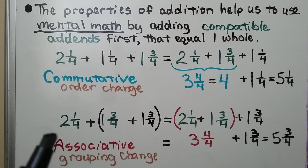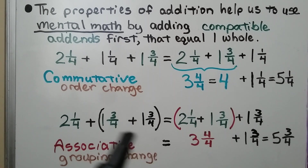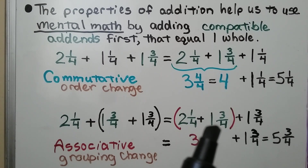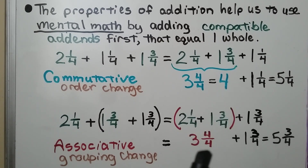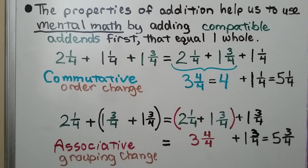If we change the problem so we have 2 and 1 fourth plus 1 and 3 fourths plus 1 and 3 fourths in parentheses, we can use the associative property to change the grouping. We add 2 and 1 fourth plus 1 and 3 fourths together to get 3 and 4 fourths. Then we add 1 and 3 fourths to get 5 and 3 fourths.